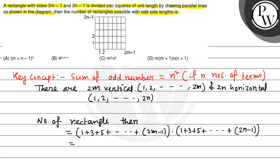The sum of these odd numbers - there are m terms - gives m square multiplied with n square. So which option is correct? Option C is correct, m square n square.